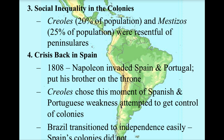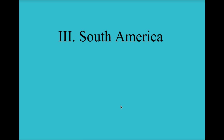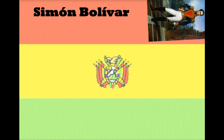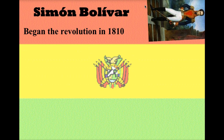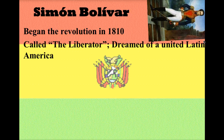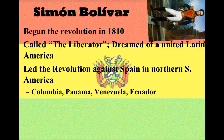We're going to focus first on South America. The South American revolution is led by Simón Bolívar, who begins the revolution in 1810. He's pretty much the George Washington of South America — a fantastic general, very charismatic and popular. He leads several successful independence movements, earning the nickname 'the Liberator' because he was freeing so many people from European control. His dream was a united Latin America, similar to what the United States was — a grand vision of all these united states working together under one central government.